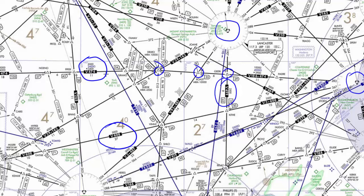Airways are all Class E airspace, controlled airspace, and they extend from 1,200 feet AGL up to 18,000 feet MSL. Above 18,000 feet there are also J or Jet airways, but for this lesson we're going to focus on the lower altitude V or Victor airways.